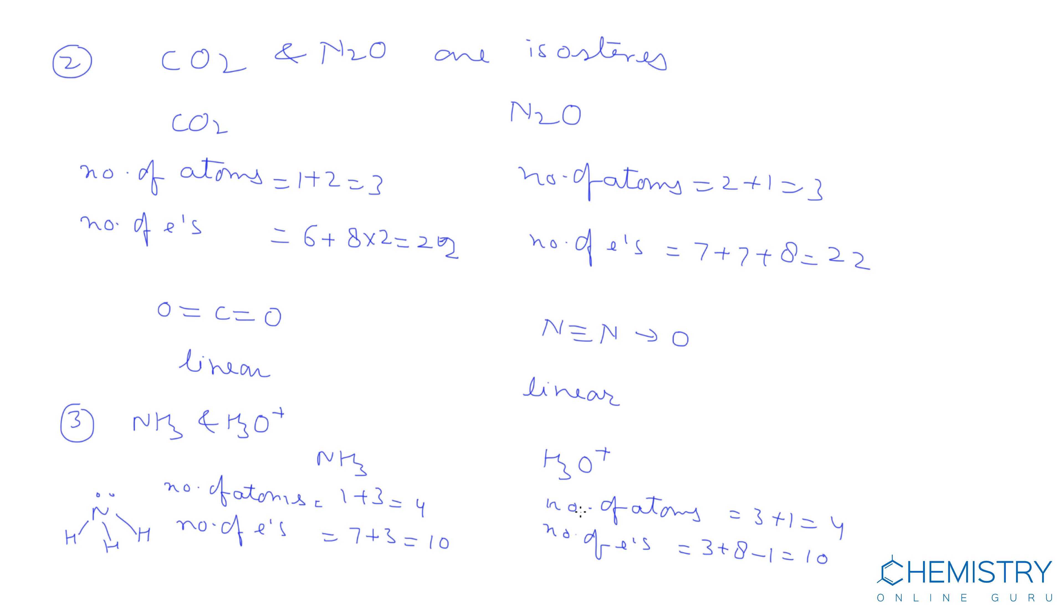Geometry of ammonia is pyramidal. Geometry of hydronium ion is also pyramidal. Number of atoms, number of electrons, and geometry are all the same, therefore ammonia and hydronium ion are isosters.